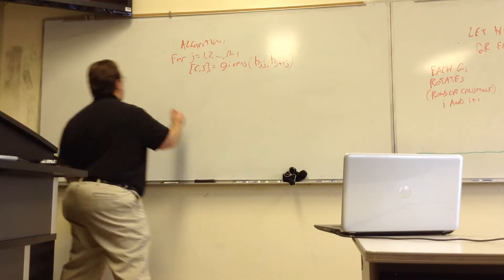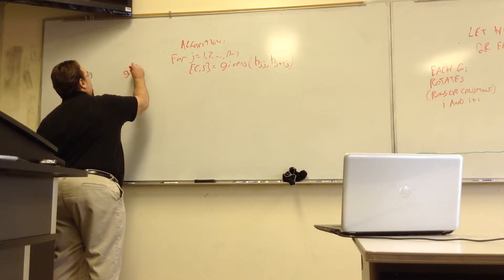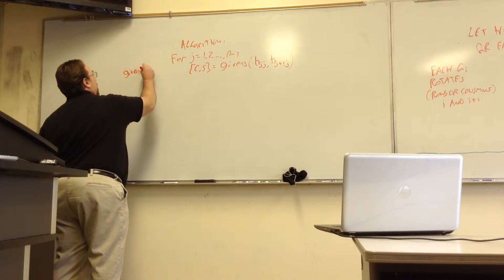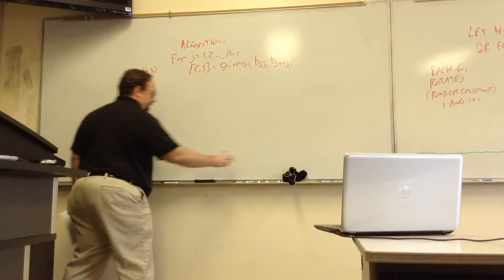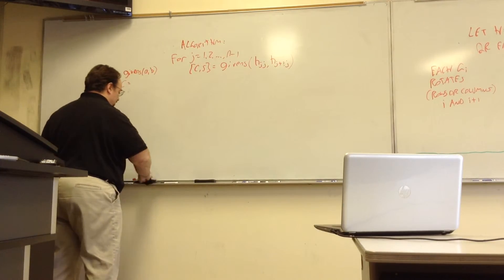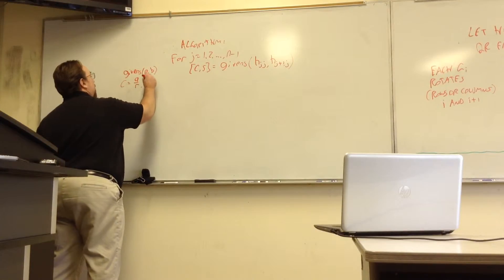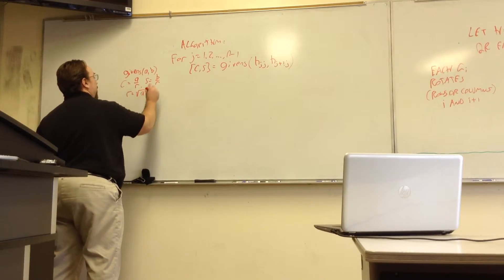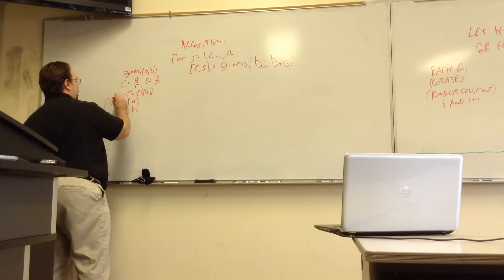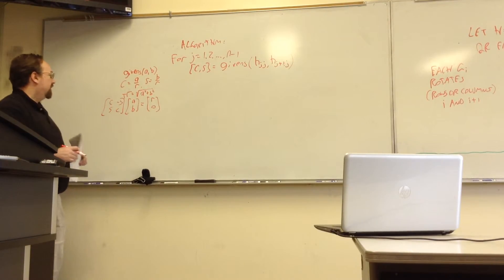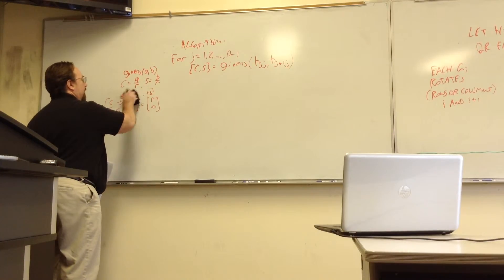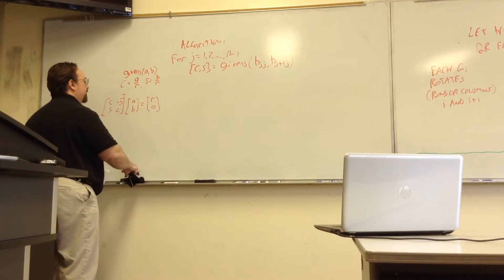And just to refresh your memory, if you apply this givens function to two numbers AB, your cosine is A over R, S is equal to B over R, where R is the square root of A squared plus B squared. And it takes the vector AB and multiplies on the left to get a vector where the second entry is zero.